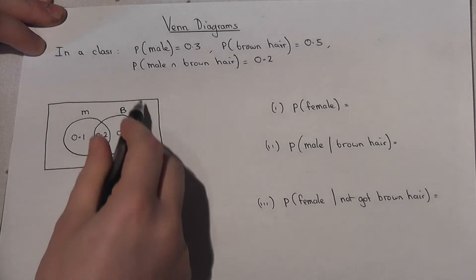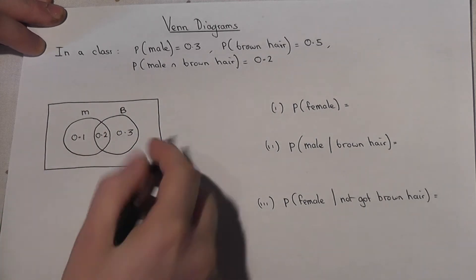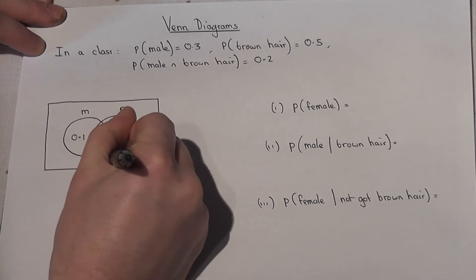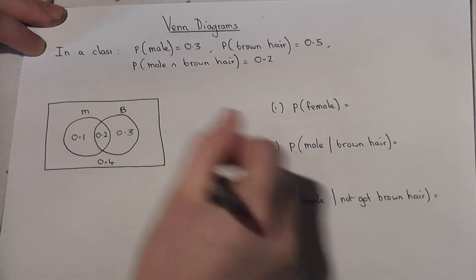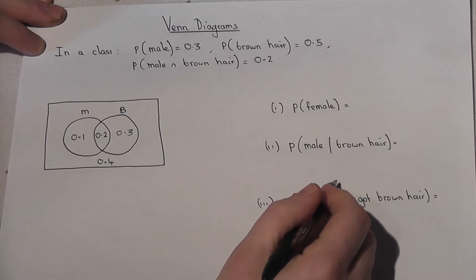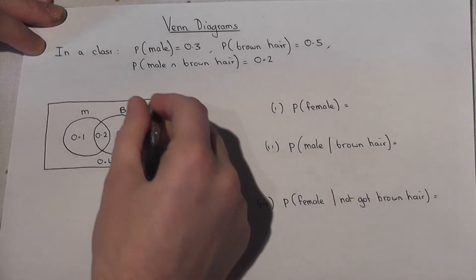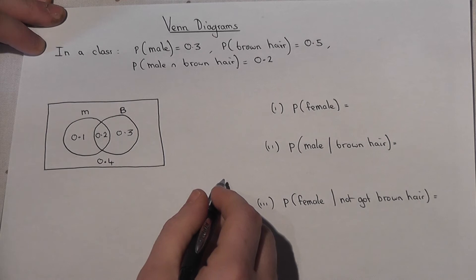0.2, 0.3 is 0.6, so the bit outside which represents neither male nor brown hair. So the entire box adds up to 1.